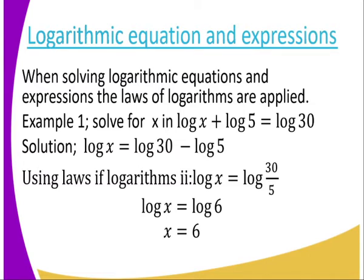For example, solve for x: log x plus log 5 equals log 30. We rearrange: log x equals log 30 minus log 5 — taking like terms together. Using the laws of logarithms this becomes log x equals log (30 divided by 5). Since the bases are the same, x equals 6.